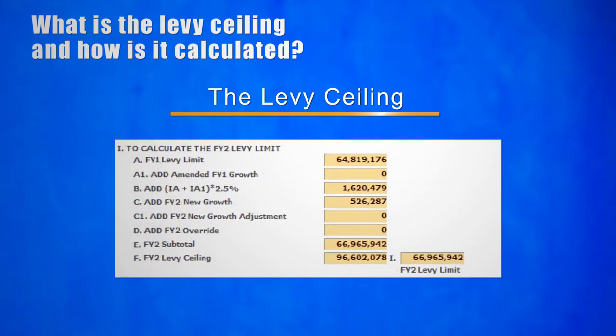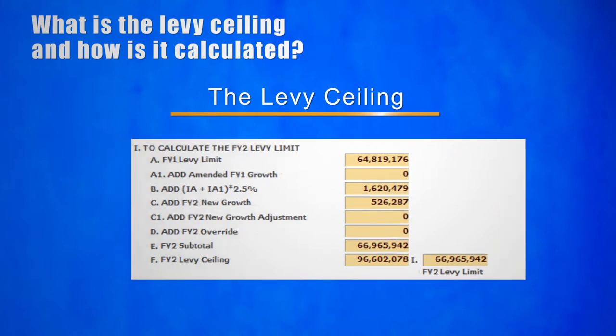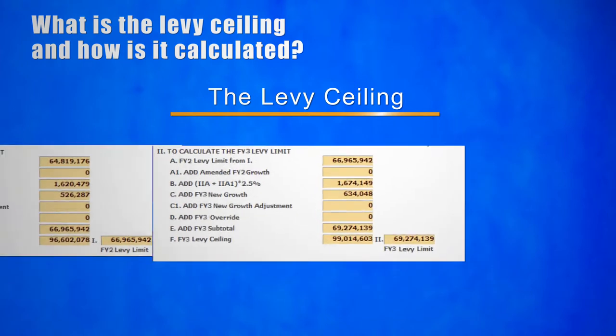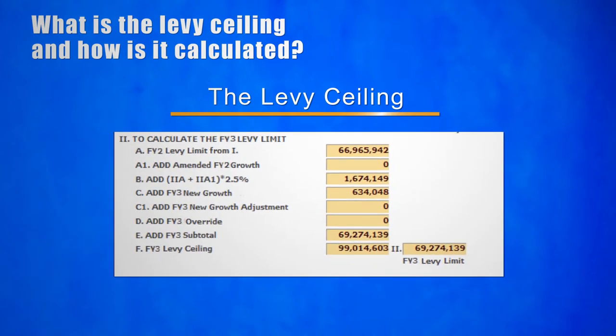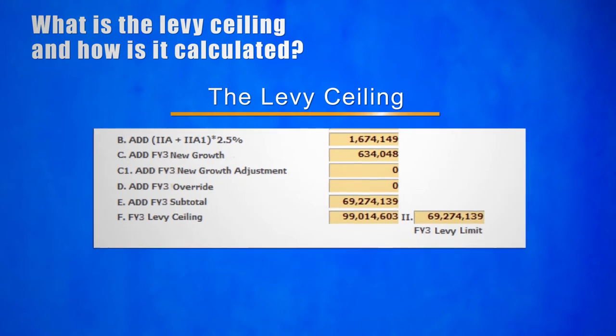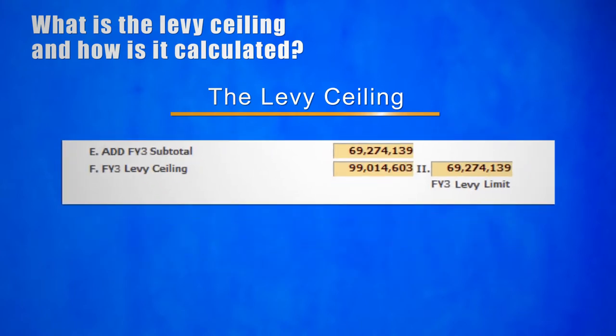The final step in determining the new levy limit for a year is to compare the subtotal — our preliminary limit — that results from increasing last year's levy limit by the annual two and a half percent and new growth factors to the levy ceiling. The levy ceiling is the lesser of the two numbers. The subtotal is the new levy limit for this year so long as it is below or at most equals the levy ceiling for the year.